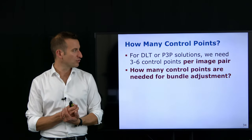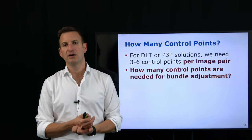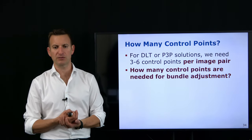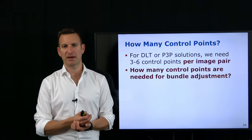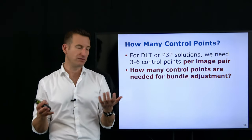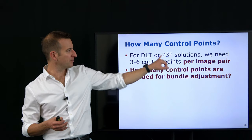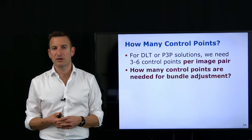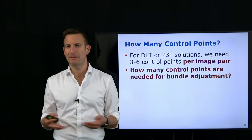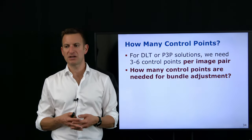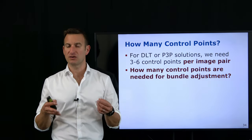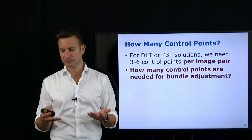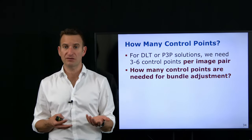How many control points do we actually need? For previous solutions like the direct linear transform or the projective three-point algorithm, we needed three to six control points per image pair. For bundle adjustment, if we run it completely without control point information and then compute absolute orientation assuming only a similarity transform separates our photogrammetric model from the map data, we only need three control points — because we have seven degrees of freedom to fix and every point is a three-dimensional vector.